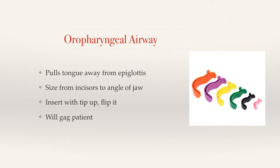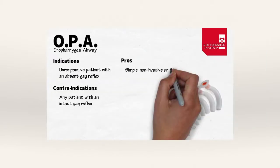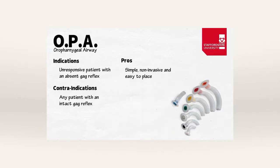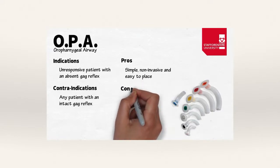In general, you put the OPA in with the tip up, slide it in, flip it around, and retract the tongue with that. Once it's in place, you can bag the patient easily over it. The device is sized by putting it onto the angle of the mandible — you want one that goes from roughly the incisors to the angle of the mandible.